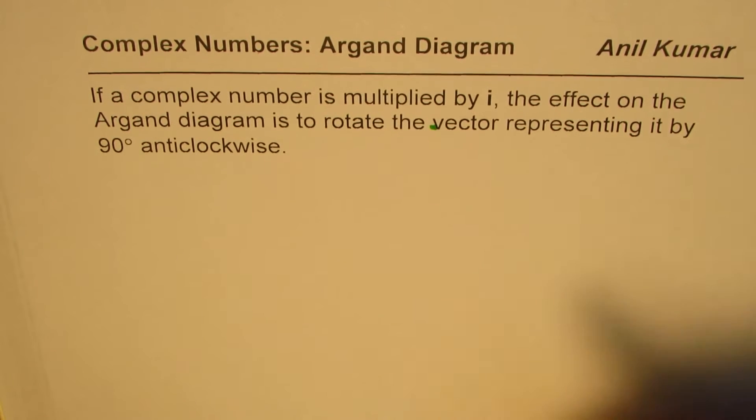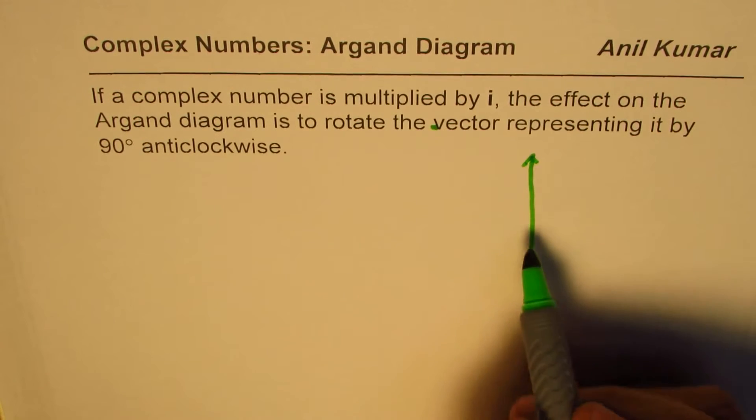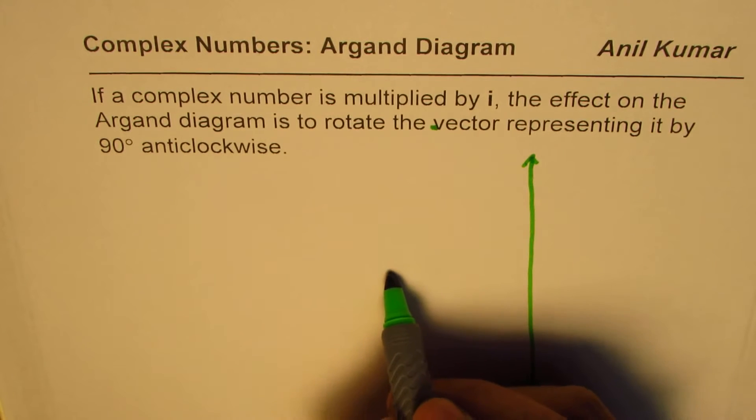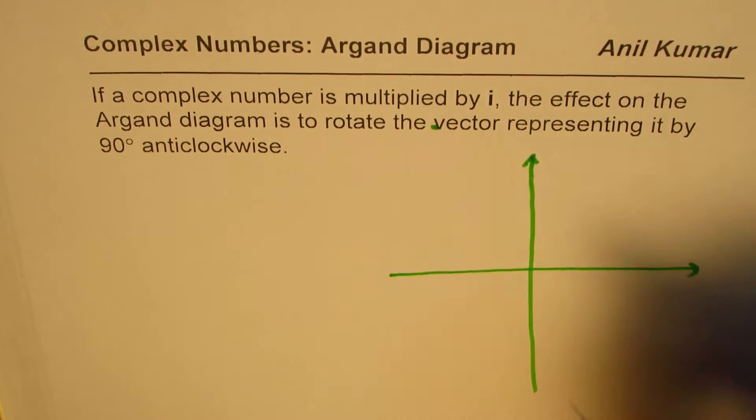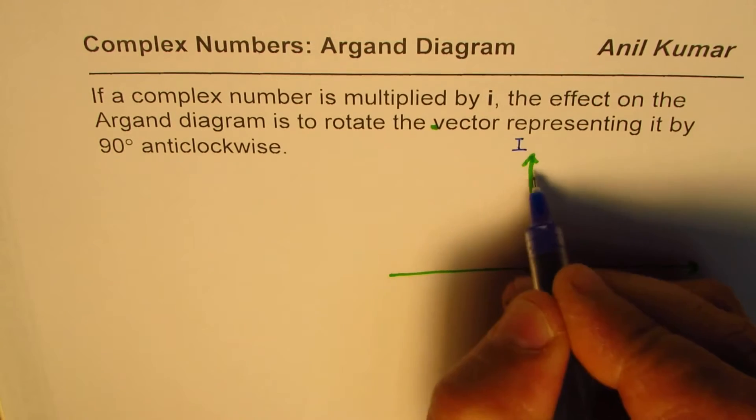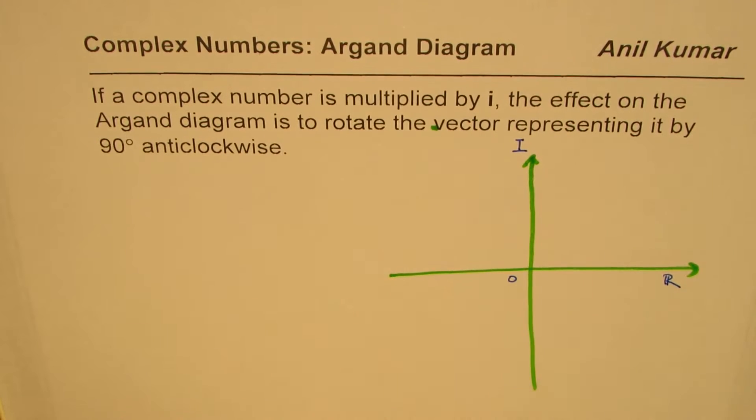So, let us say that we are representing the imaginary part of a complex number along the y-axis and the real part along the x-axis. So, imaginary part i is along the y-axis, the real part r is along the x-axis over zero.